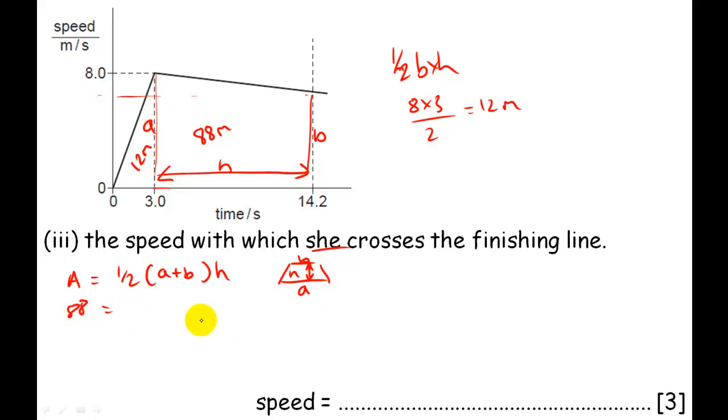Eighty-eight is equal to, eighty-eight meters which is the area of the trapezium, is equal to a half. A is eight, plus b which I don't know, which is what I want to find out. And from here to here, from three to fourteen point two is eleven point two.